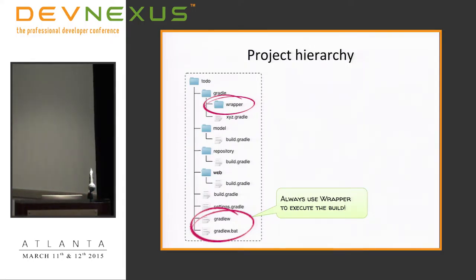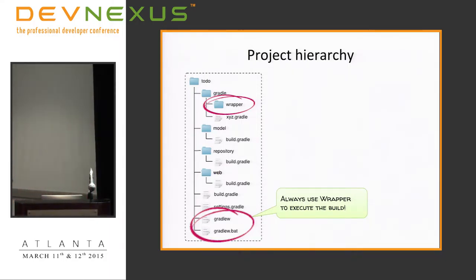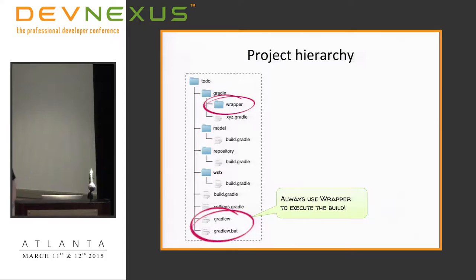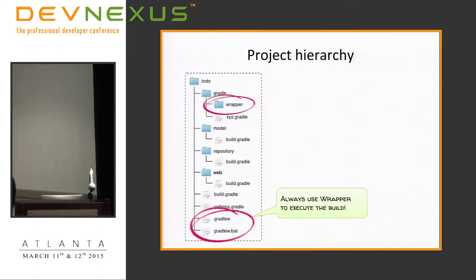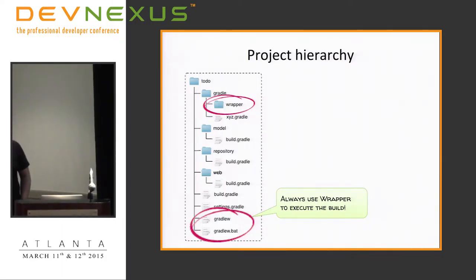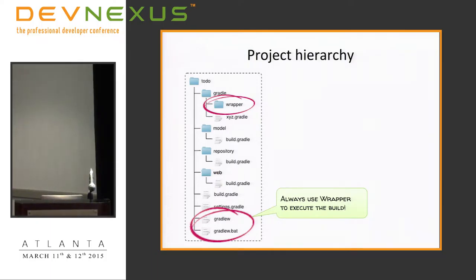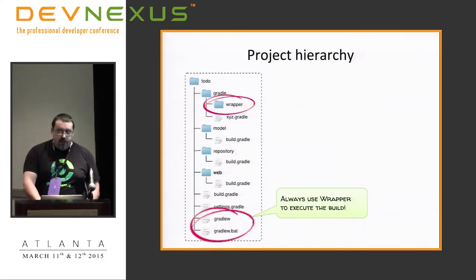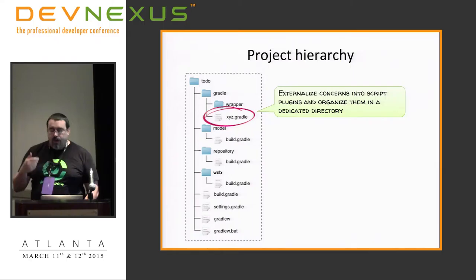The Gradle wrapper is a good thing to use here. What it does is allow us to couple the version of Gradle with the source code itself. If I'm turning this over to a continuous integration server, I don't have to worry that because I'm using Gradle 2.3, that CI server also has to have 2.3. The wrapper will say: "This project uses 2.3 — let me see if you've got it installed. No? I'll go download it and make it available." The next time, it says: "You already have 2.3 from last time, I'll just use that." This is a nice way to couple the version of Gradle with the source code itself.